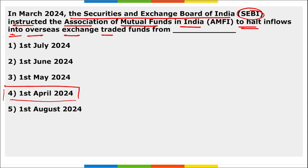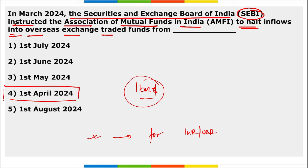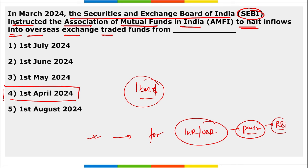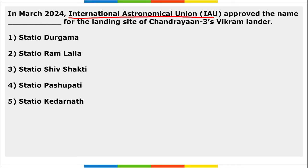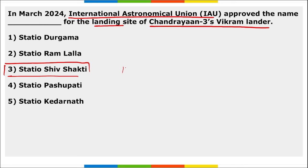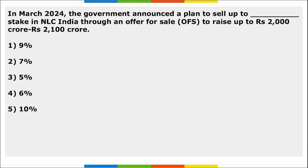SEBI instructed the Association of Mutual Funds in India (AMFI) to halt inflows into overseas Exchange Traded Funds from 1st April 2024, as the current limit of $1 billion set by RBI is nearing exhaustion. The International Astronomical Union (IAU) approved the name 'Statio Shiv Shakti' for the landing site of Chandrayaan-3's Vikram lander. This approval was given on 19th March.